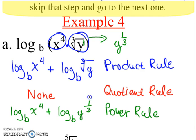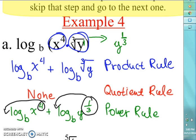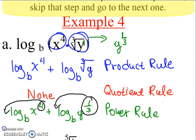Now we apply the power rule: we take the exponents and move them to the front of each log. So the 4 from X to the fourth moves in front, and the 1/3 from Y to the 1/3 moves in front.